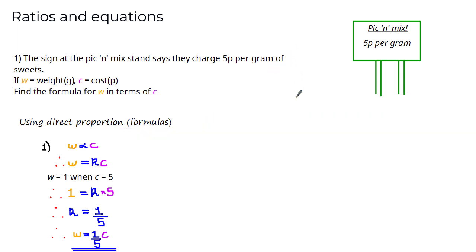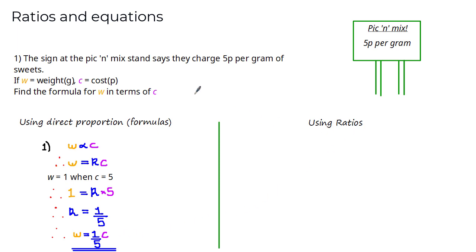Another way to solve this problem is by using ratios. In previous tutorials we discussed how strongly linked ratios are with proportion. Given that the pick and mix stand charges 5p per gram, the ratio between w to c is 1 to 5.